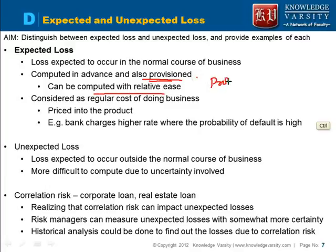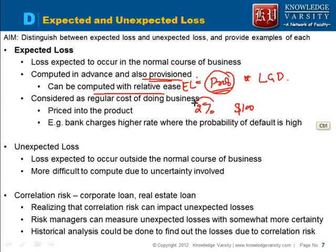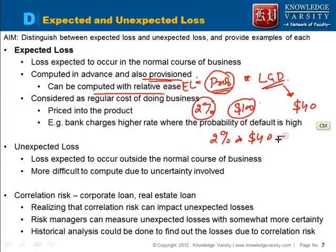Expected loss is calculated as the probability of loss multiplied by the loss given default. For example, if you have lent $100 and estimate a 2% probability that the person will default, and the loss given default is $40, then the expected loss is 2% of $40, which equals $0.80.